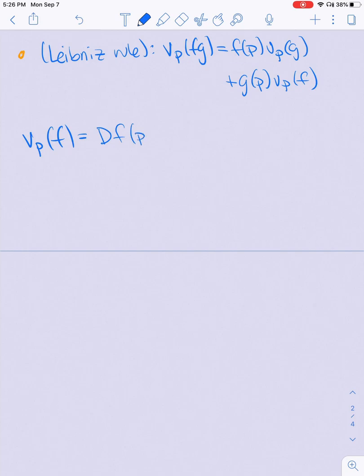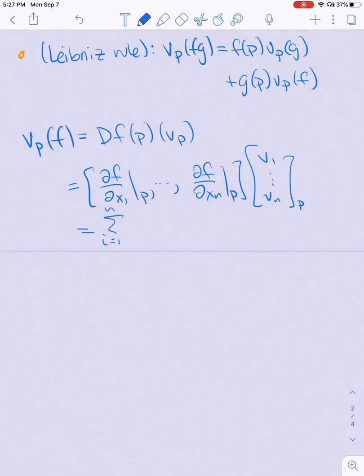Notice that when I take v_p and apply it to f, this is df at p applied to v_p, which is the matrix [df/dx_1 at p, ..., df/dx_n at p], and let's assume v has components v_1 through v_n. So I can rewrite this as the sum from i=1 to n of df/dx_i at p times v_i.